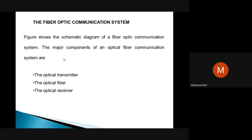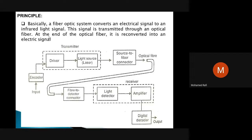There are three basic things we need here: an optical transmitter, an optical fiber, and an optical receiver. These are the major components of optical fiber communication systems. Now, the principle of an optical fiber system — you already know — is total internal reflection. Basically, a fiber optical system converts an electrical signal to an infrared light signal. This signal is then transmitted through an optical fiber.